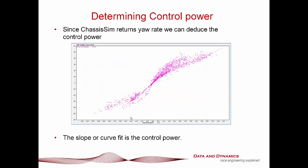The last case study is determining control power. ChassisSim returns your yaw rate and also returns the steered angle at the tire. If you plot steered angle versus yaw rate and curve-fit this, it gives you the control power. So if you start making setup adjustments and want to see what they're going to do, you just overlay these plots or overlay the curve fits. That gives you very powerful insight into what the car is going to do on the initial steer application and what it's going to be like once you apply quite a bit of steering lock — giving you a lot of different tuning options.